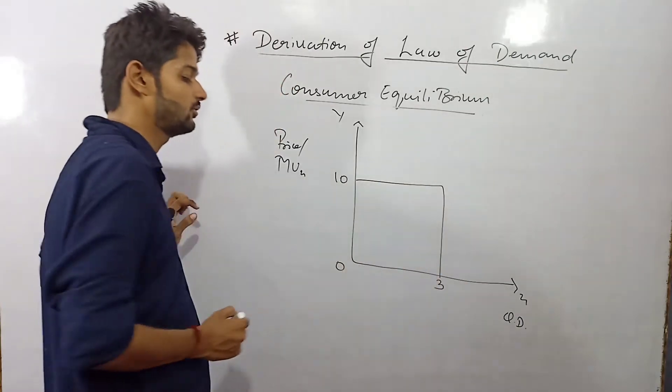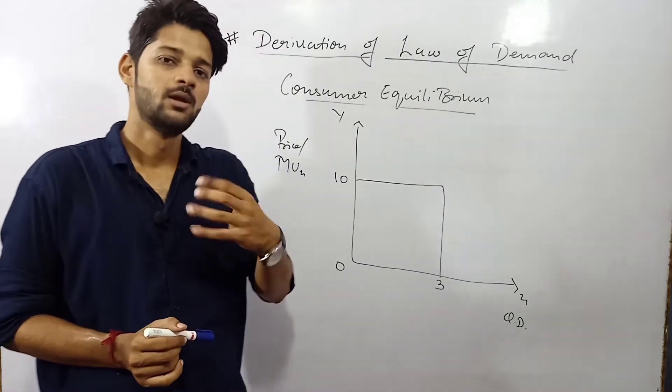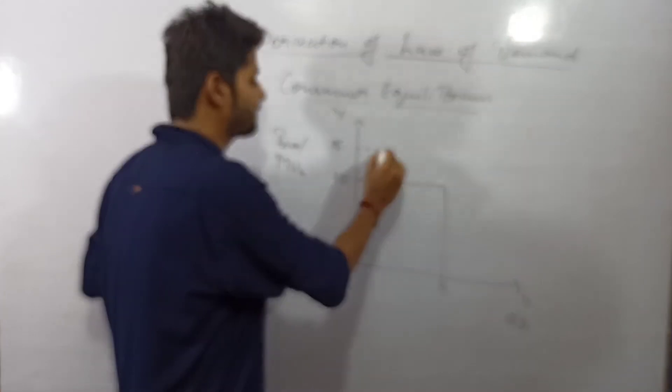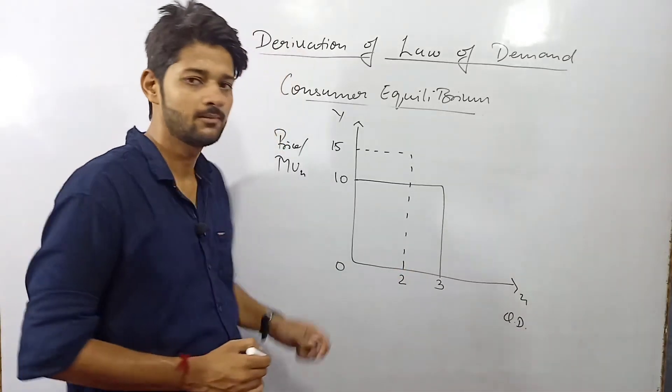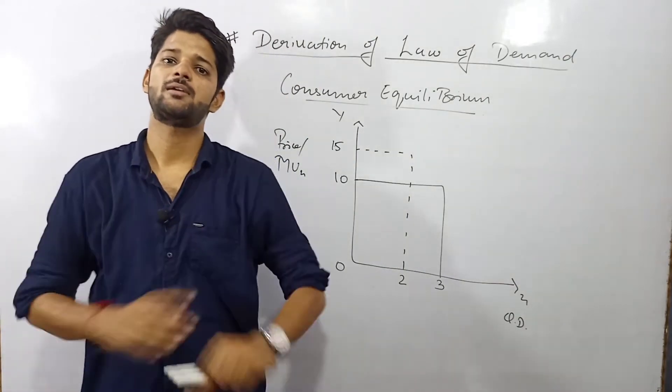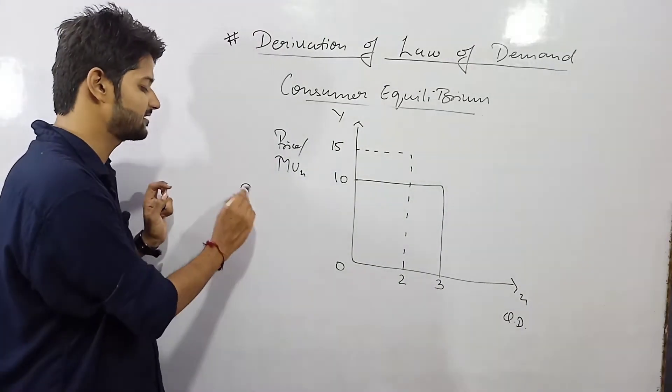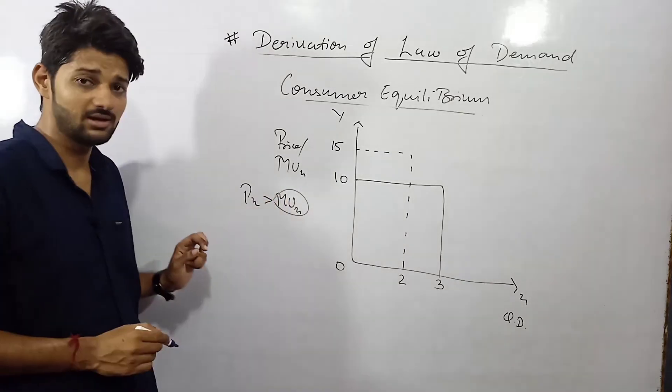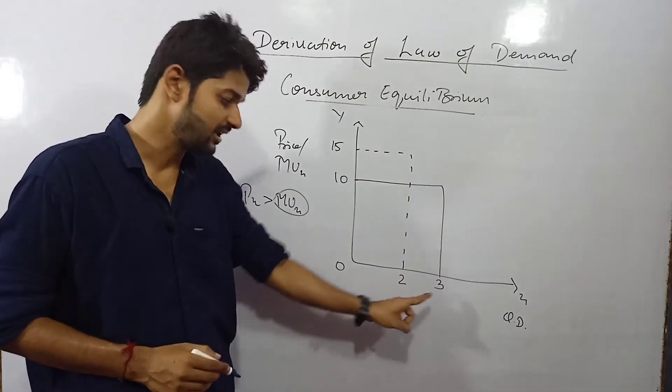Now here we go, suppose the price of the commodity is Rs.10 and consumer is having the 3 units of that commodity on the basis of consumption. Now as the price increases from Rs.10 to Rs.15, as the price increases he is going to consume less commodity because in consumer equilibrium we have studied that if the PX value is considerably more then the utility which a consumer gets is less, so as he is getting the less utility he is going to decline the quantity demand of the commodity.